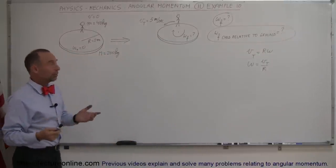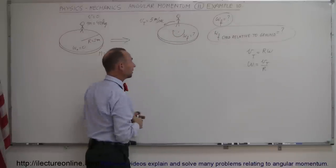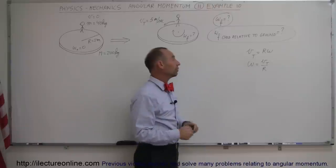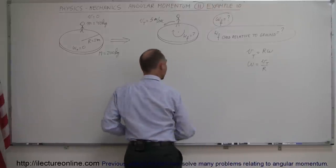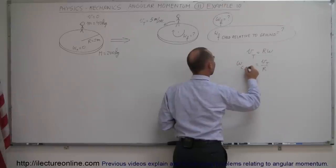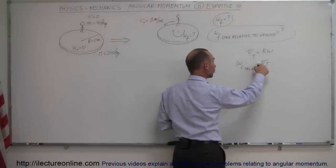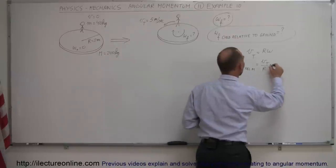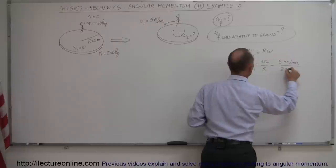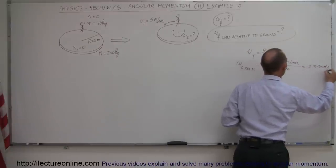The child's velocity relative to the merry-go-round is easy to figure out because the child will be walking along the edge at five meters per second. We can use this equation to find the angular velocity of the child relative to the merry-go-round: ω = v/r = 5 m/s divided by the radius of 2 meters, which equals 2.5 radians per second.